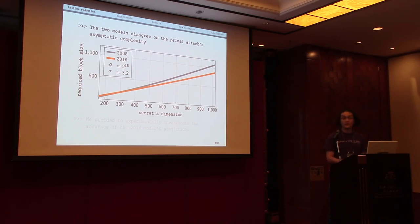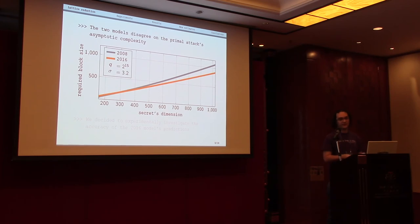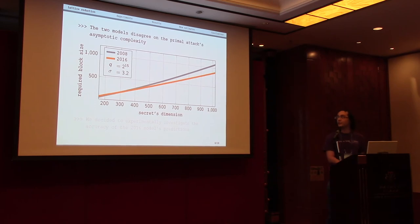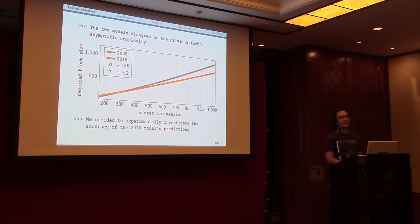Comparing the two models: if we choose parameters based on the 2008 model versus the 2016 model to determine the block size needed to solve the problem for a given LWE secret dimension, the two models disagree asymptotically. In particular, the 2008 model costs this strategy as more expensive than what the 2016 model does. So we decided to experimentally verify the accuracy of the 2016 model.